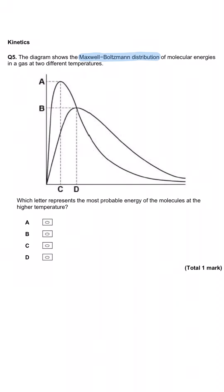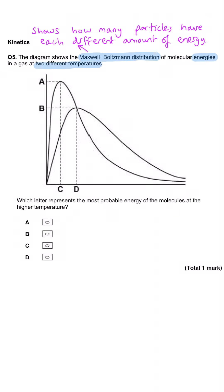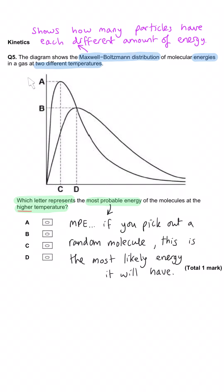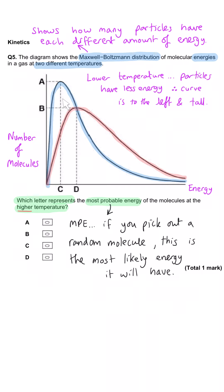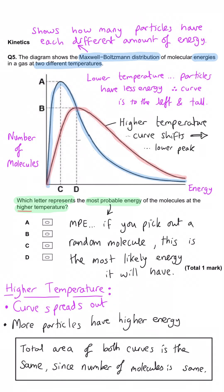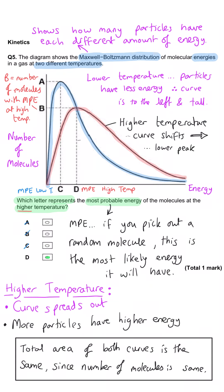The next diagram shows the Maxwell-Boltzmann distribution at two different temperatures. Which letter represents the most probable energy at the higher temperature? The left-hand curve is the lower temperature — energies are bunched up on the left, showing less spread. The higher temperature curve has shifted right, its peak is lower, and the energy is more spread out. D corresponds to the peak of the higher-temperature curve, so D is the most probable energy for the higher temperature. B, as an aside, is the number of molecules with that energy.